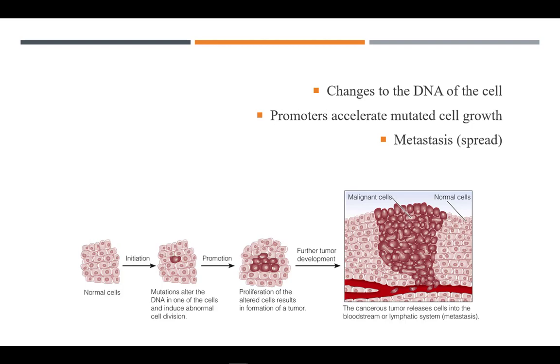This promotion of cell replication results in development of a tumor or accumulation in blood, lymph, or tissue. Eventually it can spread to other tissue, known as metastasis. At each stage there are external influences that can prevent or increase the process.